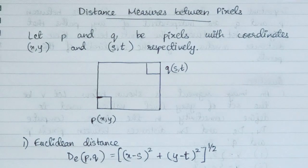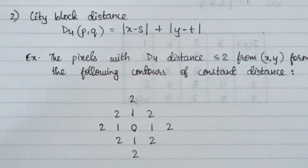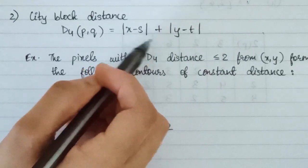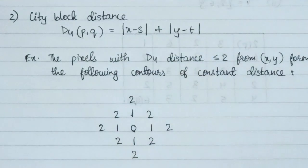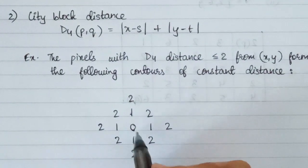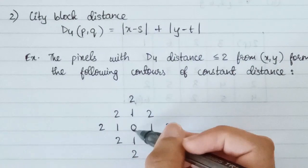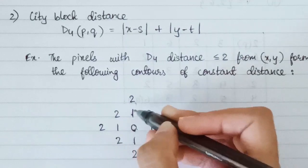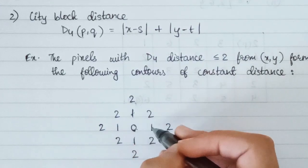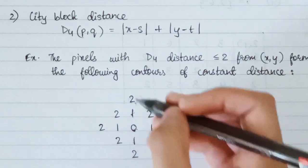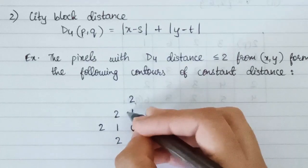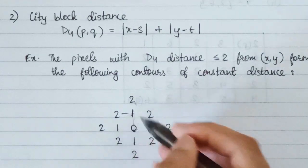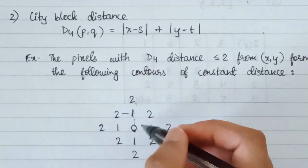The next type of distance is city block distance. The formula is D4(p, q) = |x - s| + |y - t|. We can understand this with an example: suppose we have a point (x, y) as the center. To each of the directly adjacent points the distance is one unit. But if we have to travel to a diagonal point, it cannot travel diagonally — this is similar to four-adjacency or four-way connectivity, which is why it is written as D4.